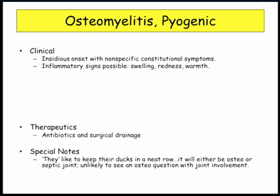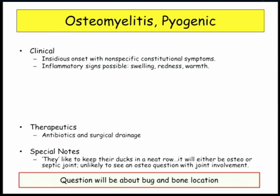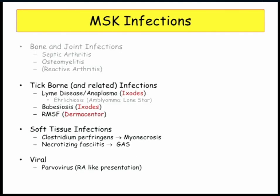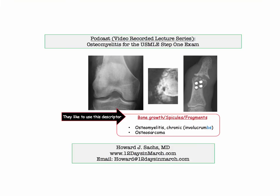The exam question will be about bug and bone location. Treatment: antistaphylococcal coverage, vancomycin, joint replacement as needed. Quinolone if you have sickle cell disease — remember, you're going after salmonella. Those are bone and joint infections. That concludes this discussion of osteomyelitis for the USMLE Step 1 exam. If you have any questions or concerns, please email me at 12 Days in March. Thank you.